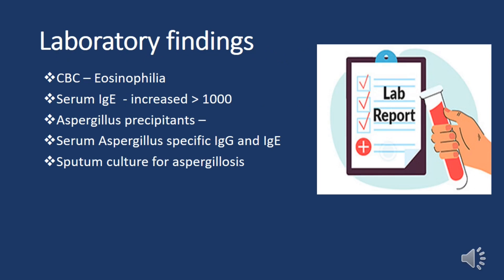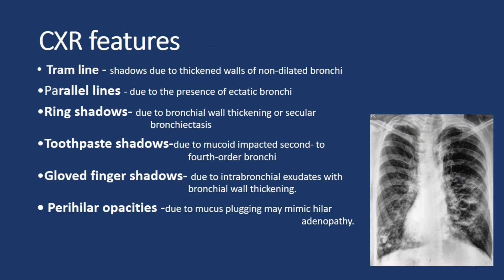Laboratory findings aiding ABPA diagnosis include: eosinophilia on complete blood count; significantly elevated serum IgE levels, frequently exceeding 1000 IU/mL, serving as a hallmark of allergic and fungal-driven inflammation; elevated aspergillus-specific IgG and IgE antibodies suggesting sensitization to aspergillus antigens; and sputum culture for aspergillus, essential for identifying its presence in the respiratory tract and confirming the diagnosis.